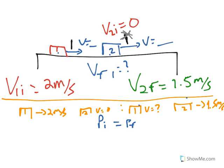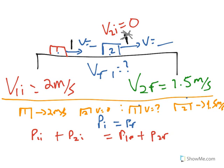For the momentum initially, we calculate the momentum of object 1 initially plus the momentum of object 2 initially — that gives us the total momentum of the system initially. The momentum finally would be the momentum of object 1 finally plus the momentum of object 2 finally. We remember that the formula for momentum is P equals MV.